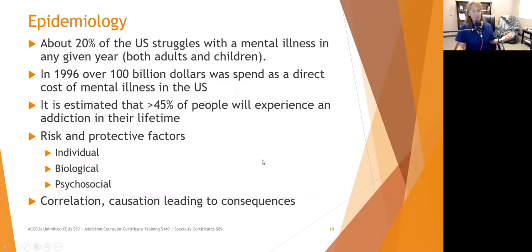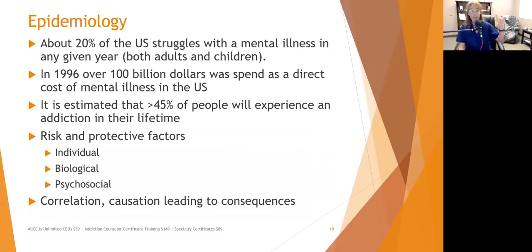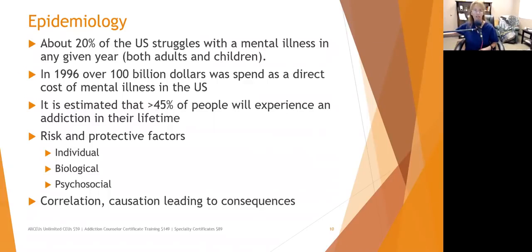About 20% of the U.S. struggles with a mental illness in any given year, and this is true for both adults and children. That means one in five people — look around your office, your church, your own household. If you've got more than five people in the household, there's a chance one may experience mental illness in a 12-month period. Those 20% may experience it in one year, get better, and then others experience it the next year, so a lot of people will be touched by mental illness at some point in their life.